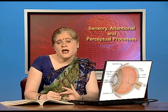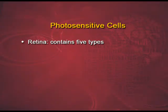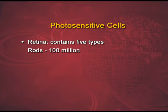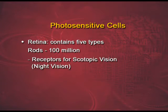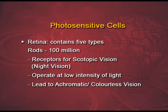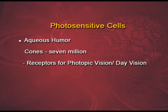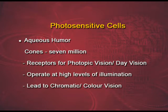Now let us come to the innermost layer of the eye — the retina. Retina is composed of five types of cells, the most prominent being the rods and the cones. These are photosensitive cells. A human eye has approximately 10 million rods. These are receptors for scotopic vision or night vision — they operate at very low intensity of light and lead to achromatic or colorless vision. On the contrary, cones are responsible for photopic vision or day vision. They operate at high levels of illumination and lead to chromatic or color vision. We humans have approximately 7 million cones in our eyes.